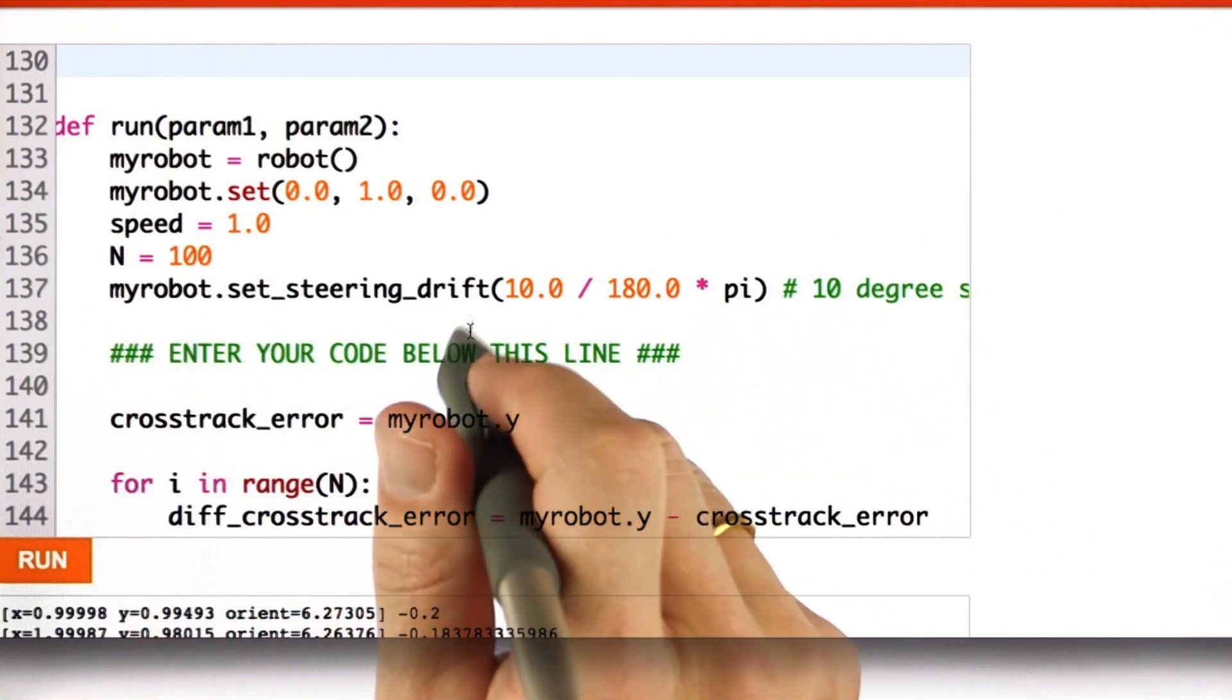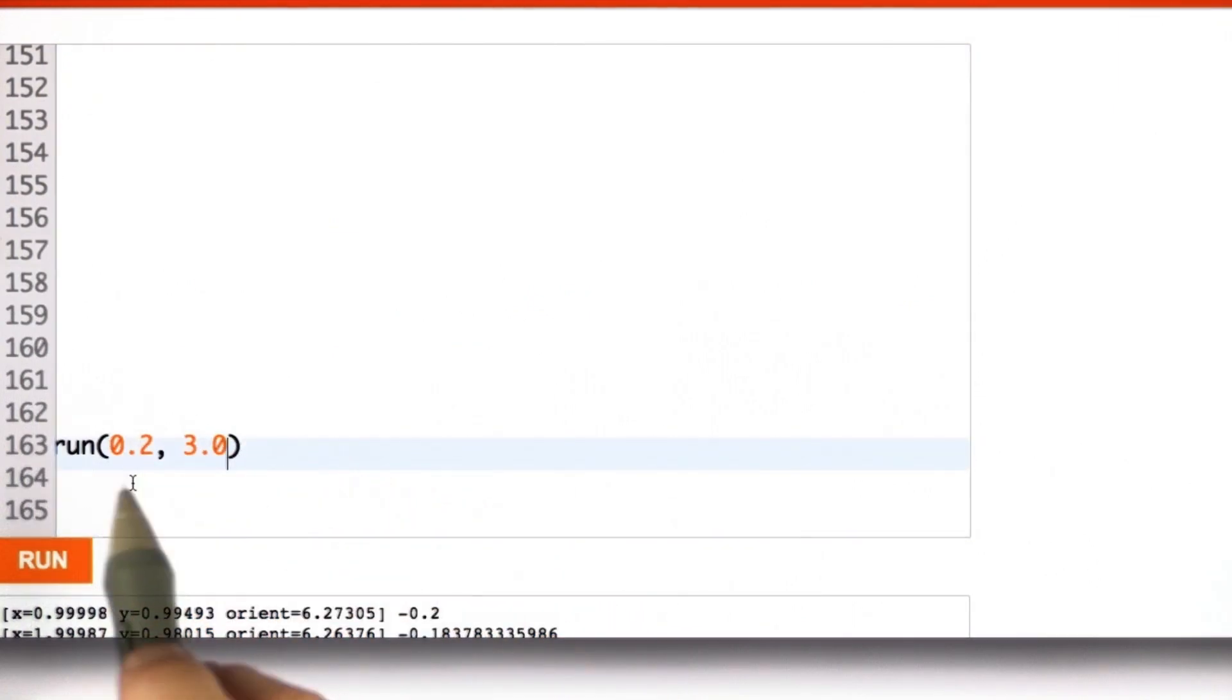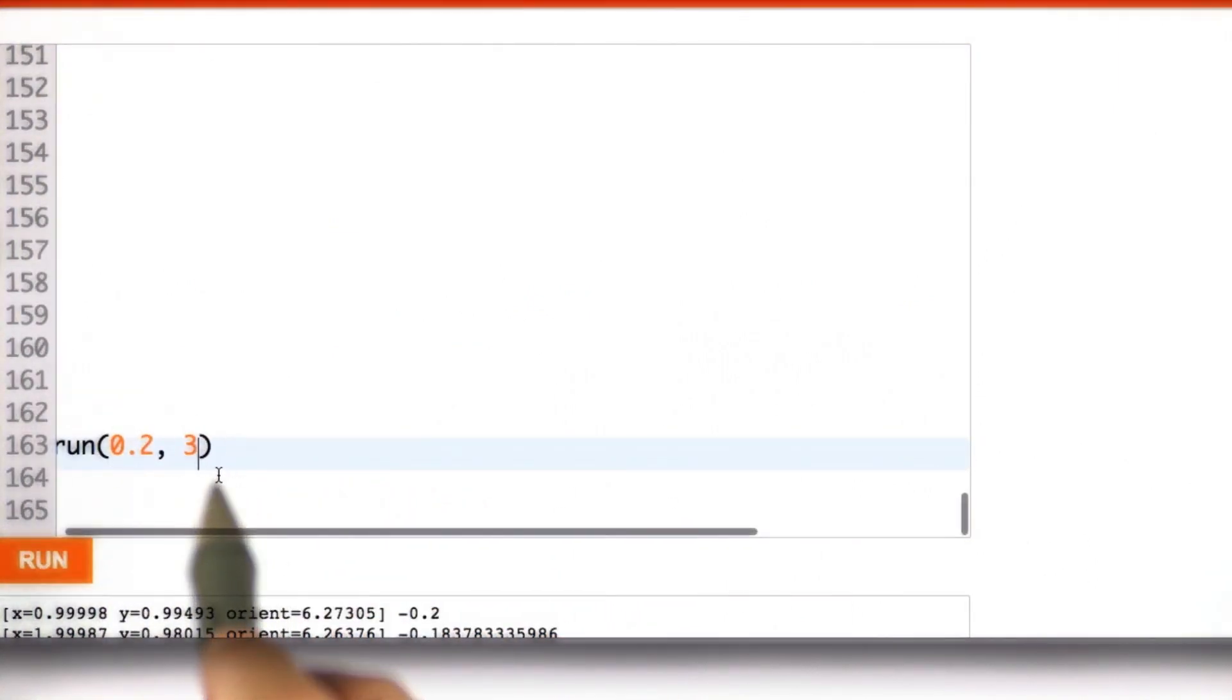And I want you to run my proportional controller with parameter 0.2. And for now, we're going to set the differential controller to 0. When you do this, what happens?